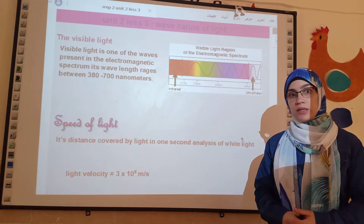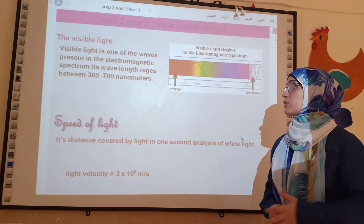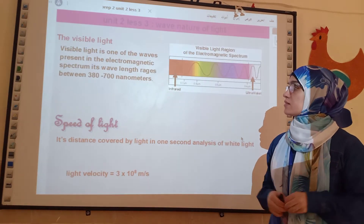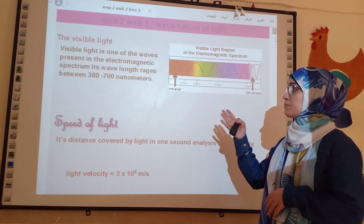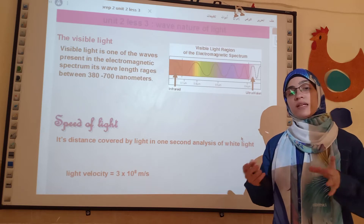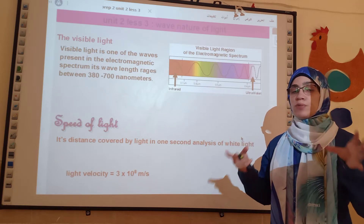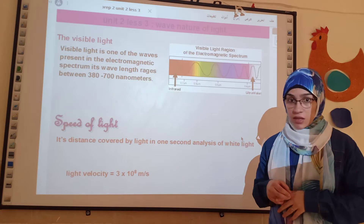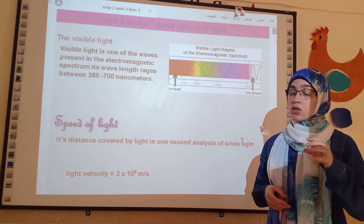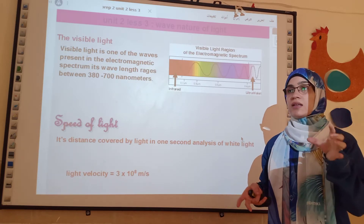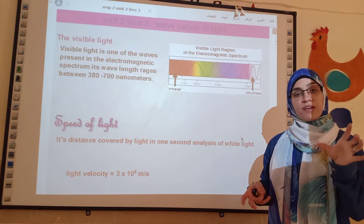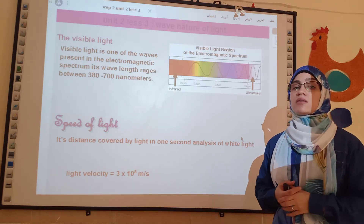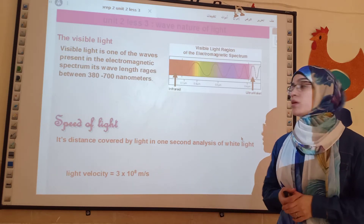First, what is the meaning of visible light? Visible light is one of the waves present in the electromagnetic spectrum, and its wavelengths range between 380 to 700 nanometers. So, the visible light has a wavelength between 380 and 700 nanometers.